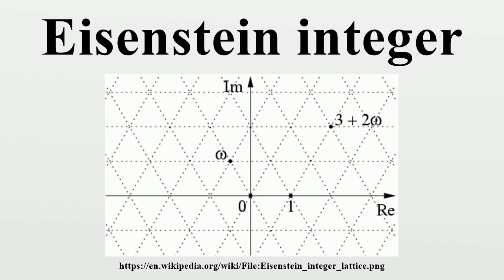A non-unit Eisenstein integer x is said to be an Eisenstein prime if its only non-unit divisors are of the form ux where u is any of the six units.